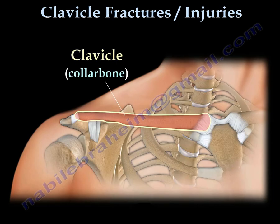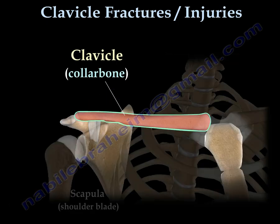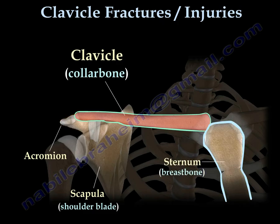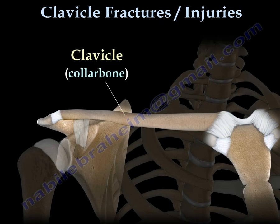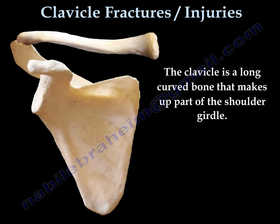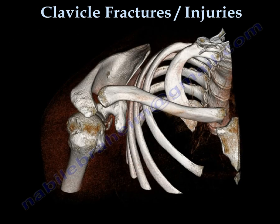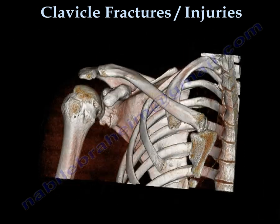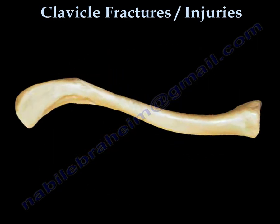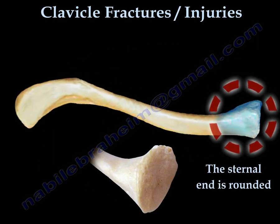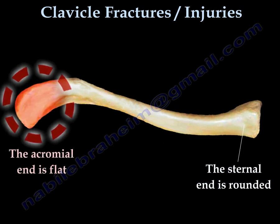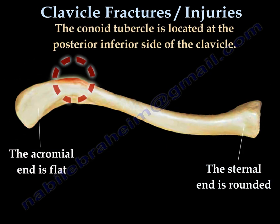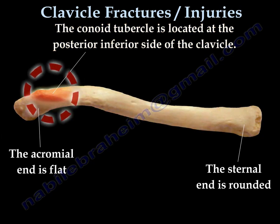This video is about clavicle fractures. The clavicle, also called the collar bone, is attached from one end to the acromion and from the other end to the sternum. It is a long curved bone and part of the shoulder girdle. It has two ends: the sternal end is rounded and the acromial end is flat. The conoid tubercle is located at the posterior inferior side of the clavicle.